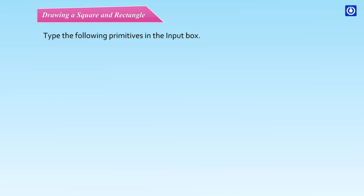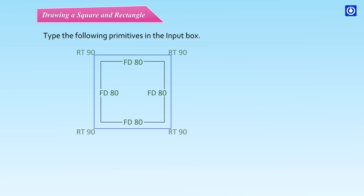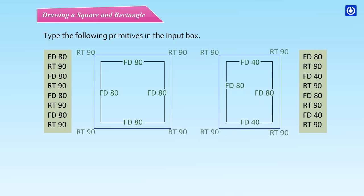Drawing a square and rectangle. Type the following primitives in the input box. For square: FD80 RT90 FD80 RT90 FD80 RT90 FD80 RT90. For rectangle: FD80 RT90 FD40 RT90 FD80 RT90 FD40 RT90. You will see a square and rectangle on the screen.